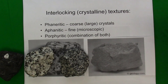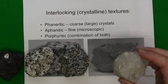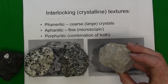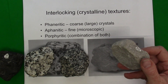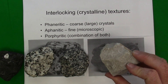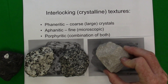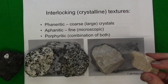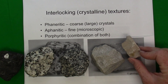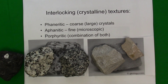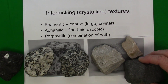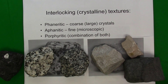If the minerals cool very quickly in a lava at the Earth's surface, we say that the texture is aphanitic, meaning that we cannot see the individual mineral crystals with the naked eye. So the rock has a dull appearance because we can't see the cleavage and luster of the minerals with the naked eye.